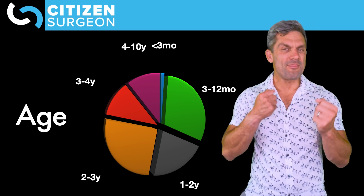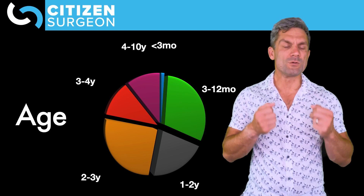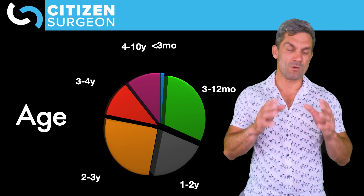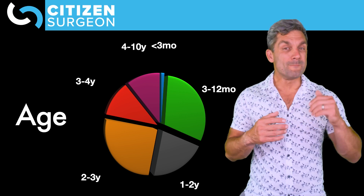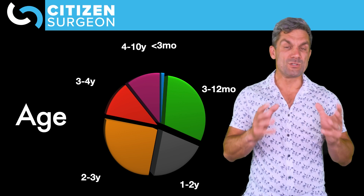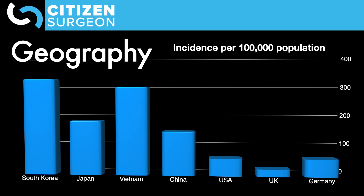In older kids, you have to think about intussusception a little bit differently. It's also very rare under three months of age. Key takeaways: most common cause of obstruction in infancy, vast majority under the age of two. When we look at geographical variation, South Korea, Japan, and Vietnam have a much higher incidence than Germany, the UK, or the United States — likely due to different prevalence of rotavirus, differences in feeding practices, and exposure to different vaccines.